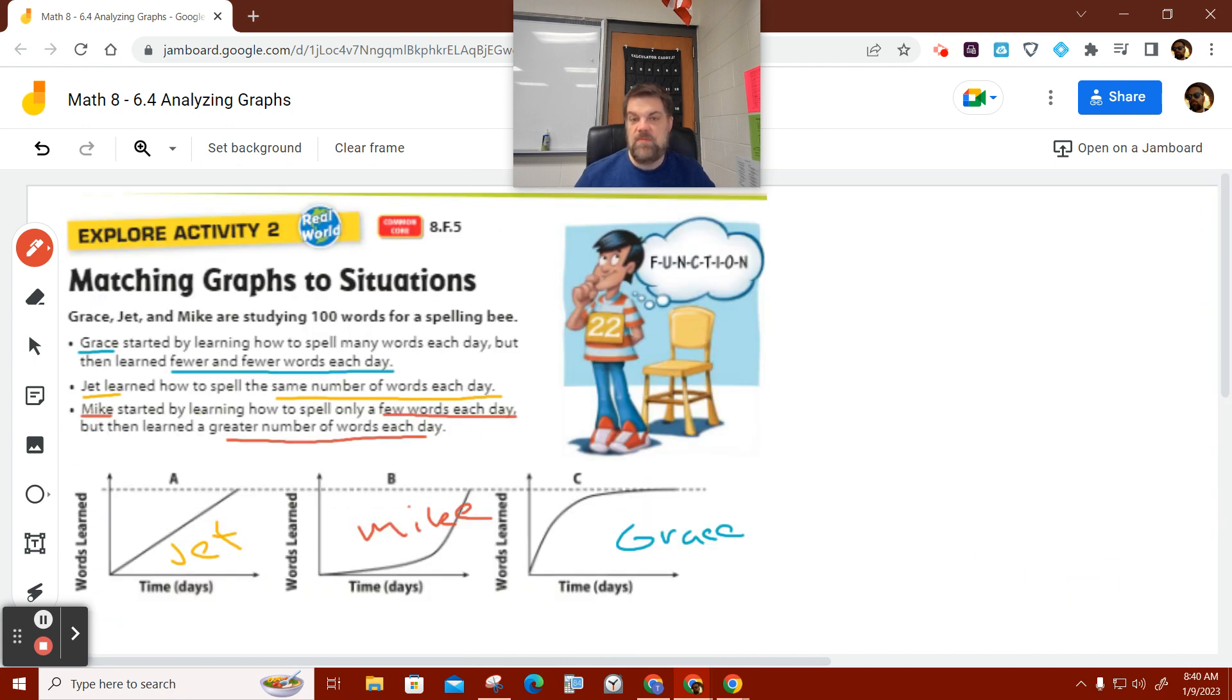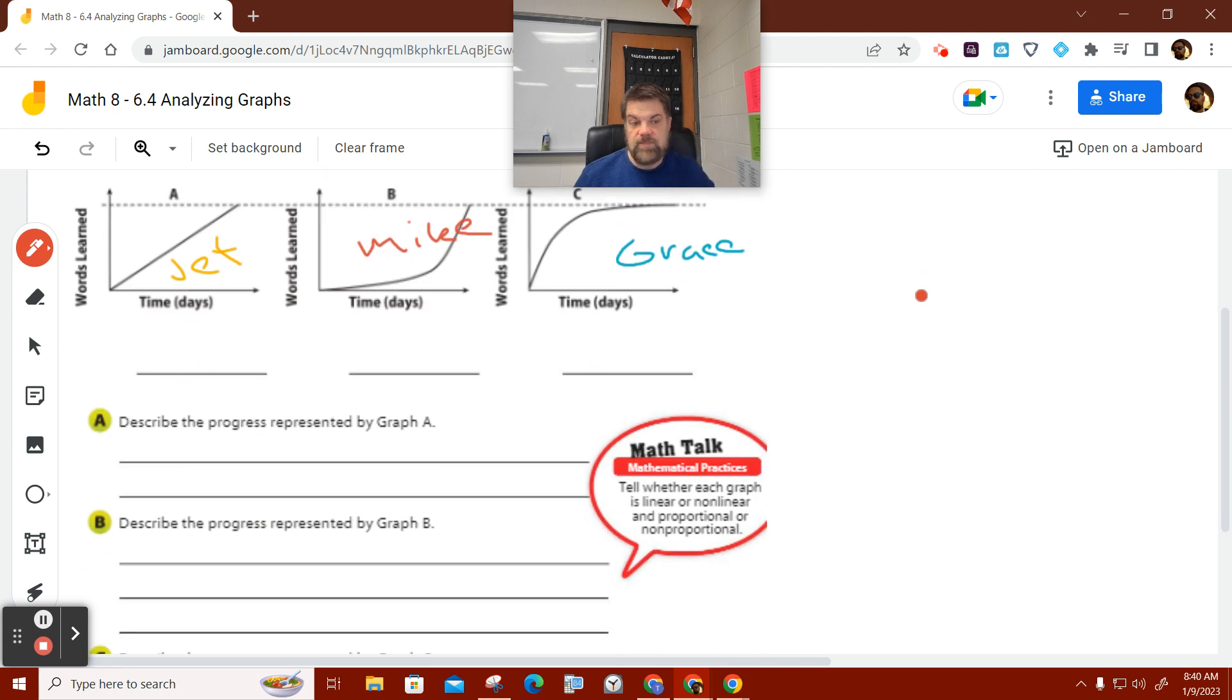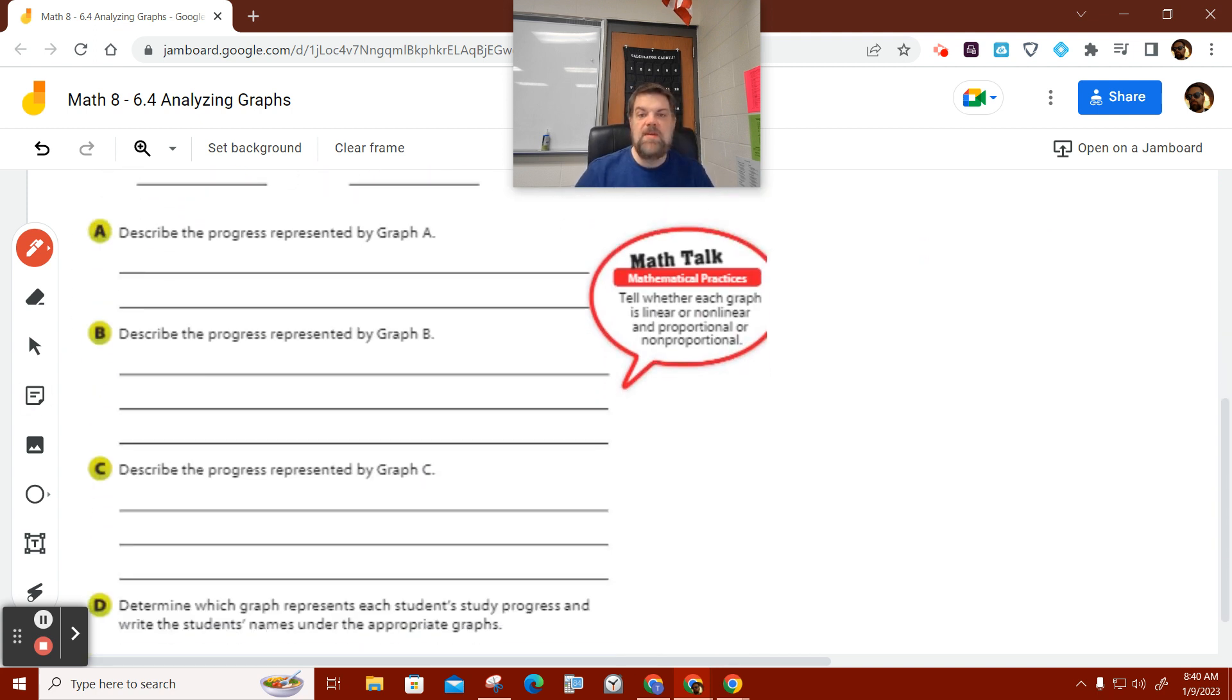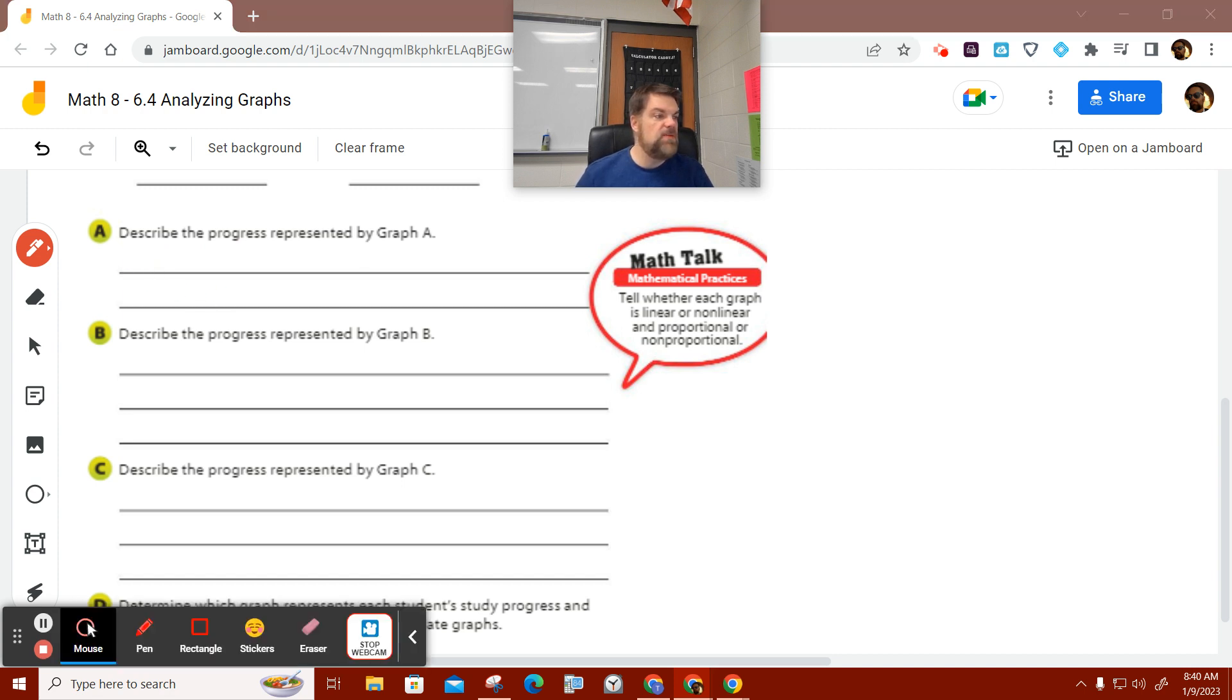So it says, now we just got to kind of write this down in the thing. It says describe what's represented in graph A. So how would we describe that?